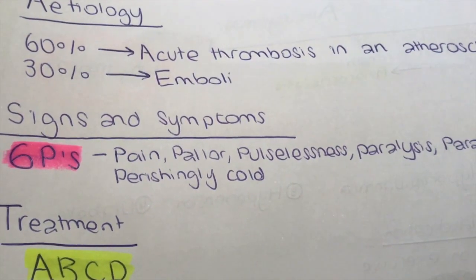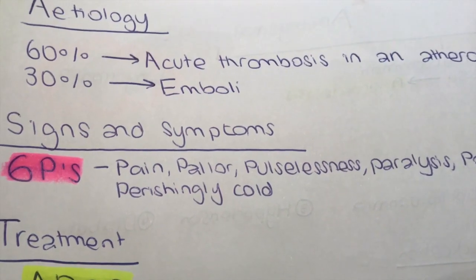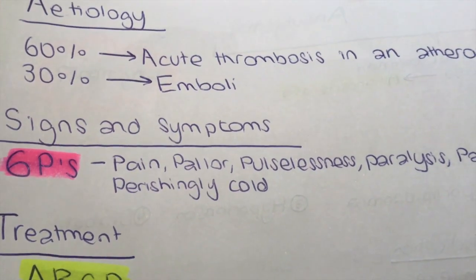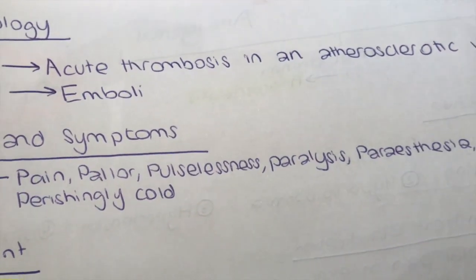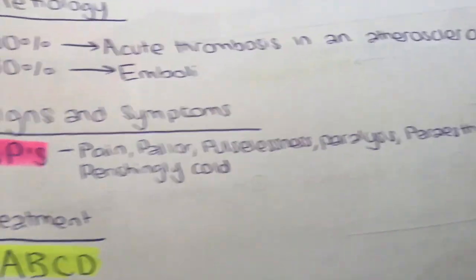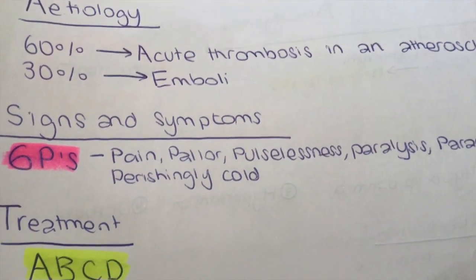The signs and symptoms of acute limb ischemia are easy to remember — they're the six Ps: pain, pallor, pulselessness, paralysis, paresthesia, and perishingly cold.